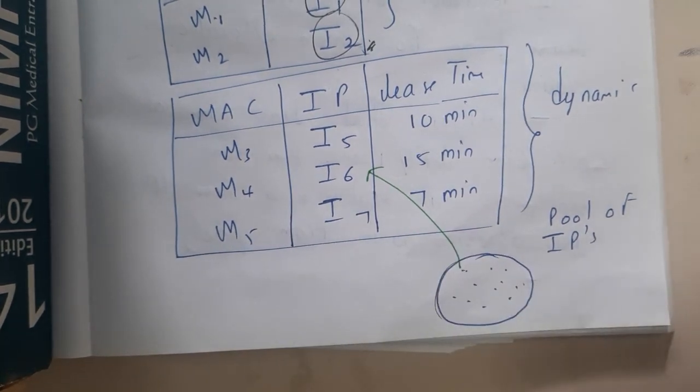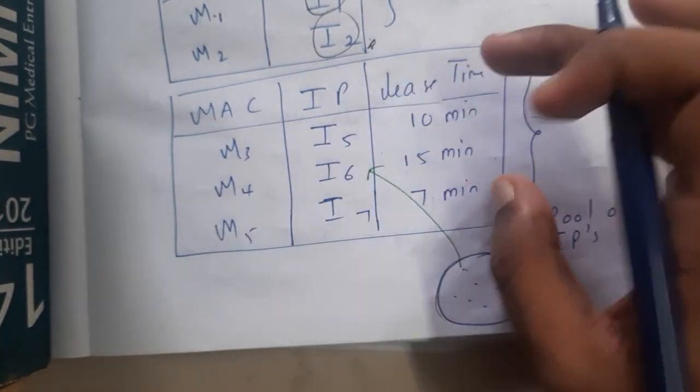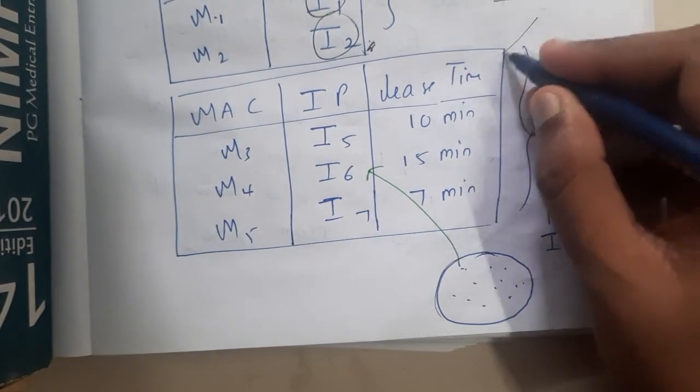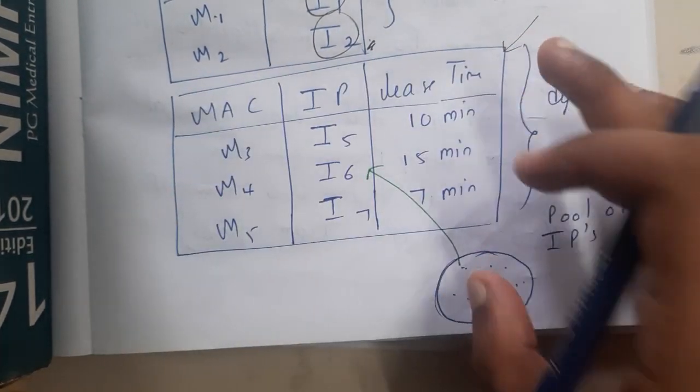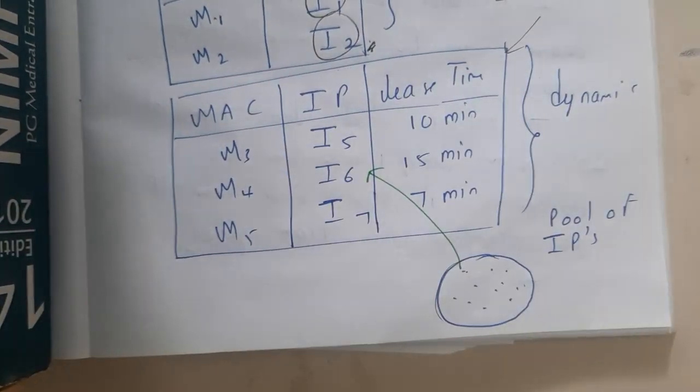In that way, randomly you are allocating the IPs with some lease time. Lease time is the maximum time for which they can use that IP. This concept of dynamically allocating IP addresses is called Dynamic Host Configuration Protocol.